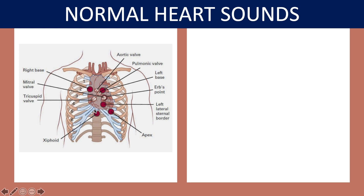Then we have a xiphoid process point, which is the fifth point — sometimes most cardiac textbooks avoid this point but it's included here. Then there is the sixth and final point known as the apex. These points correspond to the different valves: the aortic valve, which opens and closes when blood is pumped from the left ventricle into the aorta; the pulmonic valve in the pulmonary artery from the right ventricle; and the tricuspid and mitral valves, also known as atrioventricular valves, found between the atria and ventricles on the right and left sides respectively.